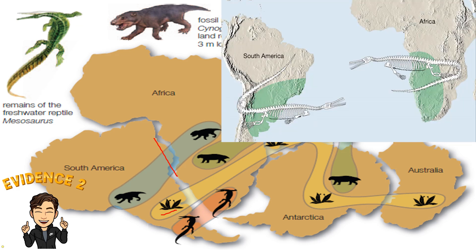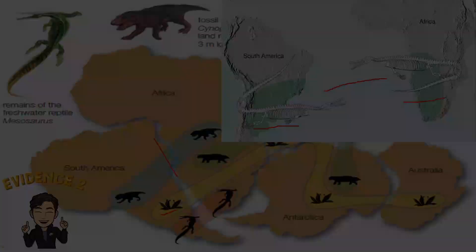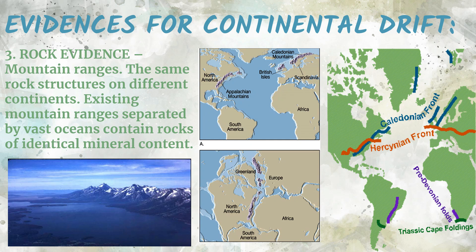Another strong evidence is the location of the Mesosaurus fossil — a freshwater reptile that, in the present day, would not be able to travel a vast distance of ocean. This indicates that South America and Africa were once joined together. Additionally, mountain ranges separated by vast distances of ocean share the same characteristics, showing that these mountain ranges were once next to each other.